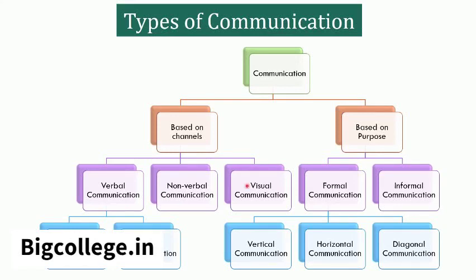Visual communication is the one that takes place through visual aids, i.e., signs, typography, drawings, graphics, colors, etc. Based on purpose, the communication can be classified as formal communication and informal communication. Formal communication is the one that follows a predefined flow in communicating the message. It can be vertical, horizontal, or diagonal communication. Informal communication is the casual communication which does not follow a predefined flow in conveying the message.